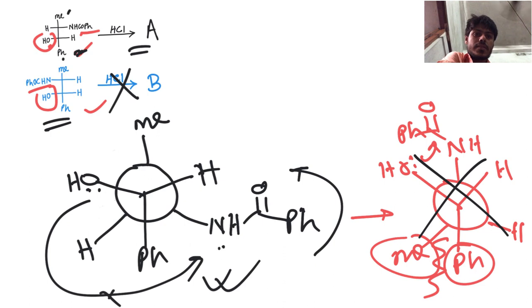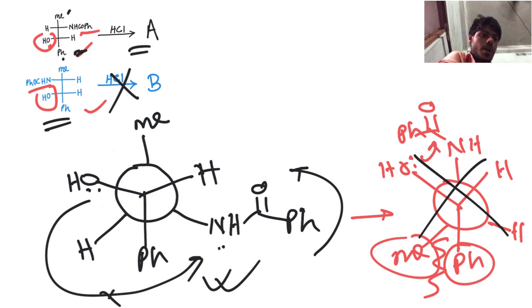So only the threo isomer (molecule one) reacts, and the erythro isomer (molecule two) does not react when treated with HCl. I hope your doubt is cleared — let me know in the comment section if you have any further questions. Thank you for watching.